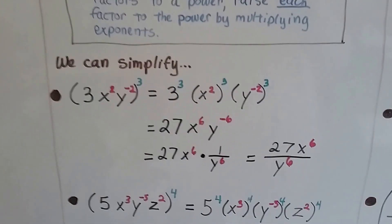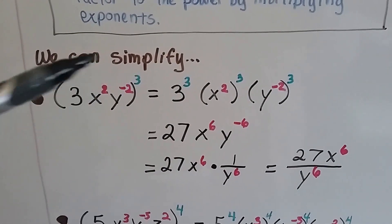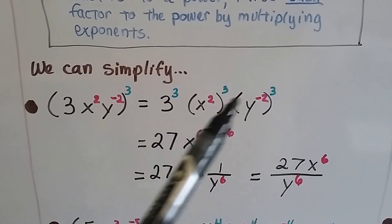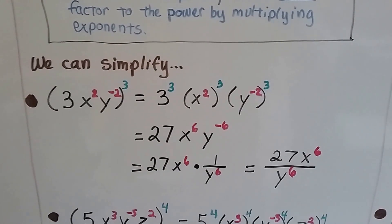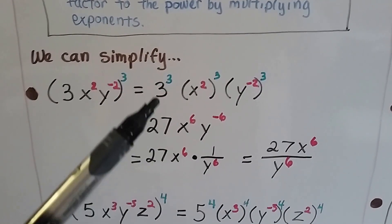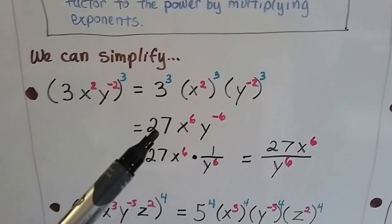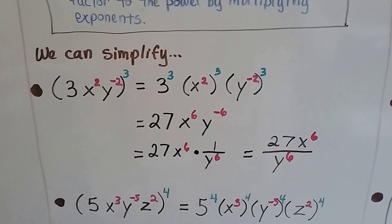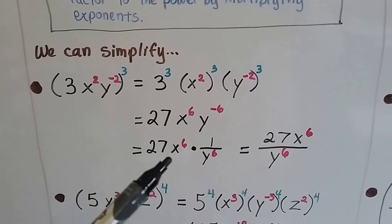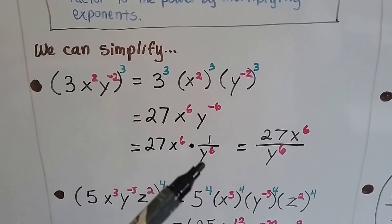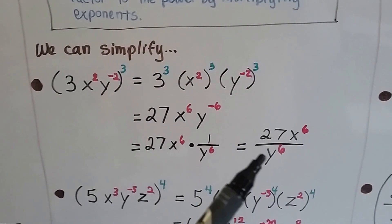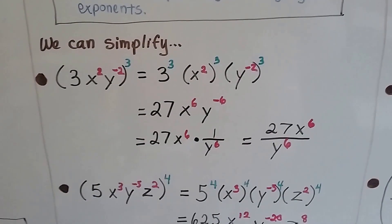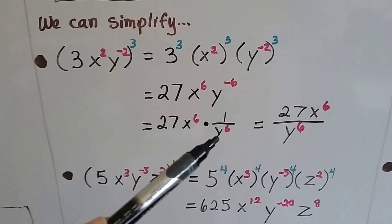And we can simplify these. We would raise the 3 to the 3, the x squared to the 3, and the y to the negative 2 to the 3. Because it's a negative exponent, this is going to make a fraction. That would give us 3 to the third power is 27 — 3 times 3 is 9 times 3 is 27. This 2 times 3 is a positive 6. And now we've got a negative 6. We can rewrite it so that this is a fraction, 1 divided by y to the sixth power. When we simplify it, all of these make 27x to the sixth power over y to the sixth power.